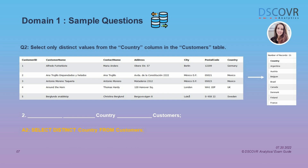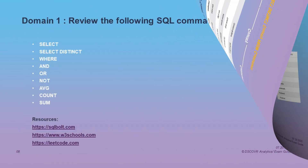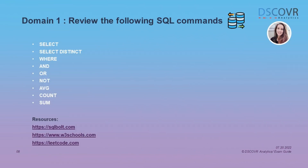Here we're asked to select only distinct values from the country column in the customers table, and we're also given the resulting output on the right-hand side. Your final statement is going to be: SELECT DISTINCT country FROM customers. Make sure you know these basic SQL commands — things like SELECT, SELECT DISTINCT, SUM, COUNT, and AVERAGE — because you will see these types of questions and will have to make the right choice when filling in the blanks.